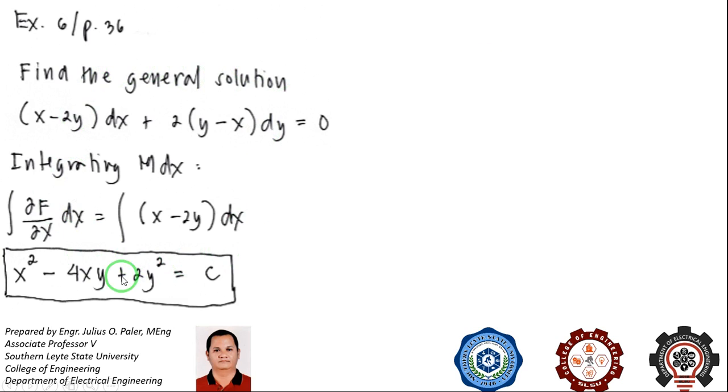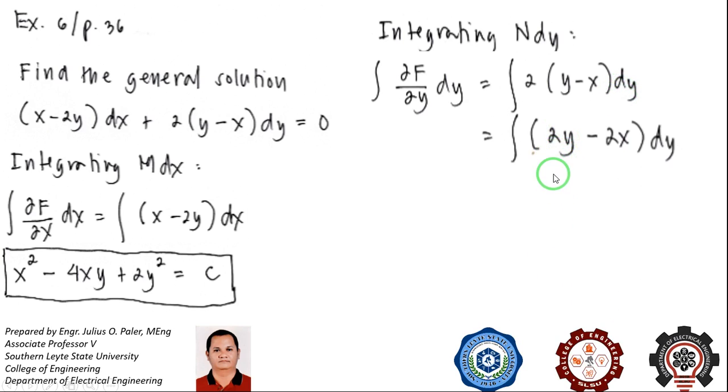Now if we choose to integrate N dy, you can also do that. N is the partial derivative with respect to Y. So integrating N dy is integrating 2 times the quantity (Y minus X) dy. Distributing, you will have the integral of quantity (2Y minus 2X) dy.